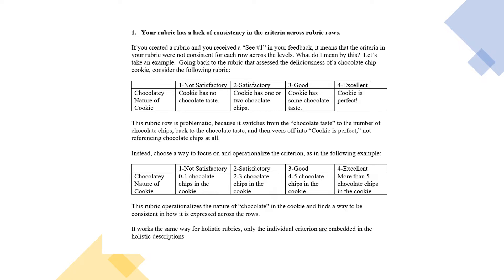Three is good: Cookie has some chocolate taste. Now we're back to chocolate taste. And four, the highest level is cookie is perfect. What does that mean? So we're switching all over the place between how we measure the chocolatey nature of the cookie.